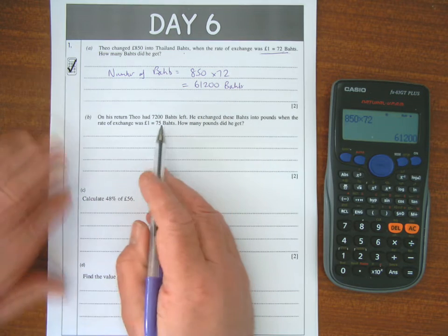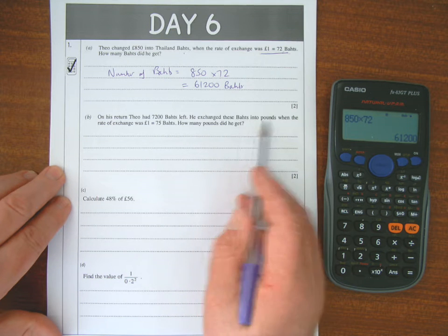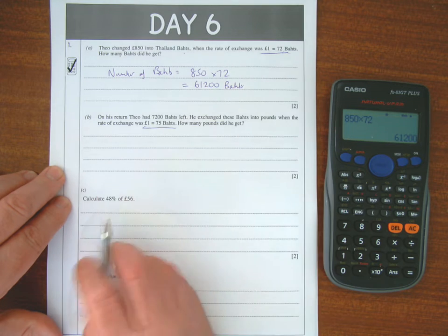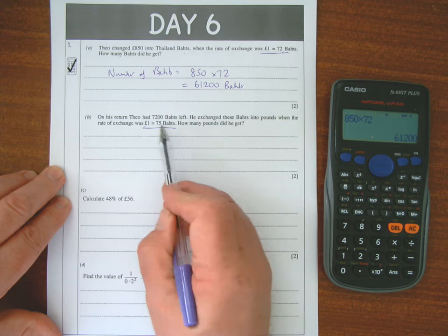On his return, he had 7,200 left. He exchanged these back into pounds, but now the exchange rate has changed to £1 to 75. So to exchange back into pounds, we divide by the exchange rate.